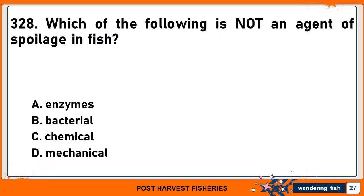Which of the following is not an agent of spoilage in fish? A. Enzymes. B. Bacteria. C. Chemical. Or D. Mechanical. The correct answer is D. Mechanical.